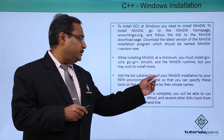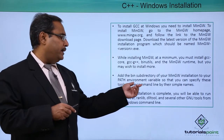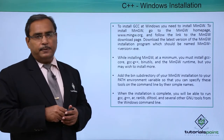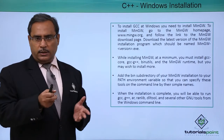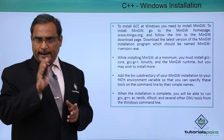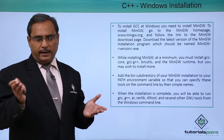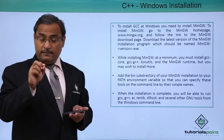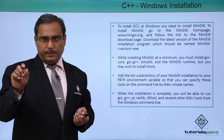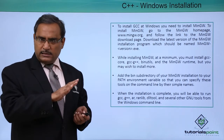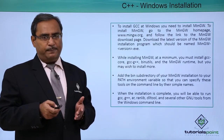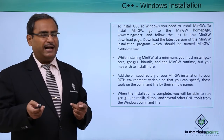Add the bin directory of your MinGW installation to your PATH environment variable so that you can specify these tools on the command line by their simple names. Go to Control Panel, then System, then Environment Variables. You will find a system variable called PATH — at the end of it, add a semicolon followed by the path of your MinGW installation up to the bin folder. This allows you to use the G++ compiler from any location.